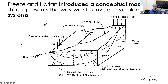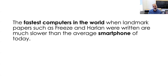What's amazing about the Freeze and Harlan conceptual model is that it is quite modern — it very much represents how we think about hydrologic systems even today. We have different portions of the landscape, ET changing across the landscape, precipitation, channel flow, and then below the ground surface we have groundwater, flow lines, a water table, and equipotential lines — really a very forward-looking approach. The catch is that the fastest computers in the world when landmark papers like Freeze and Harlan were written were actually much slower than the average smartphone in your pocket right now.